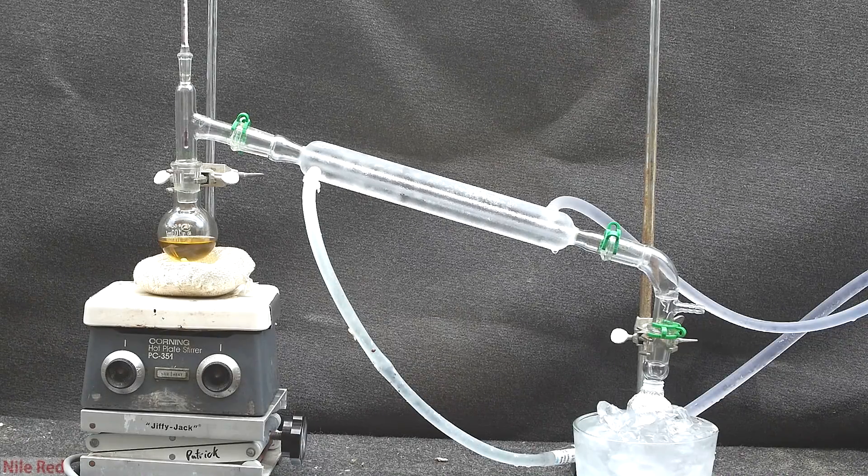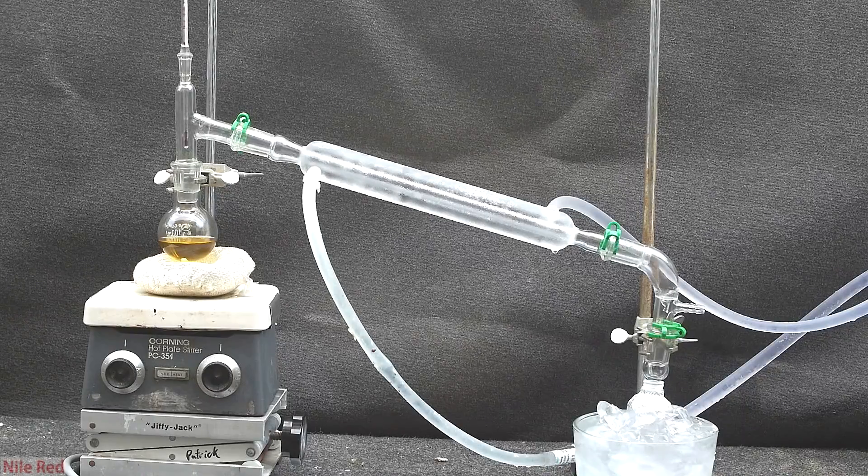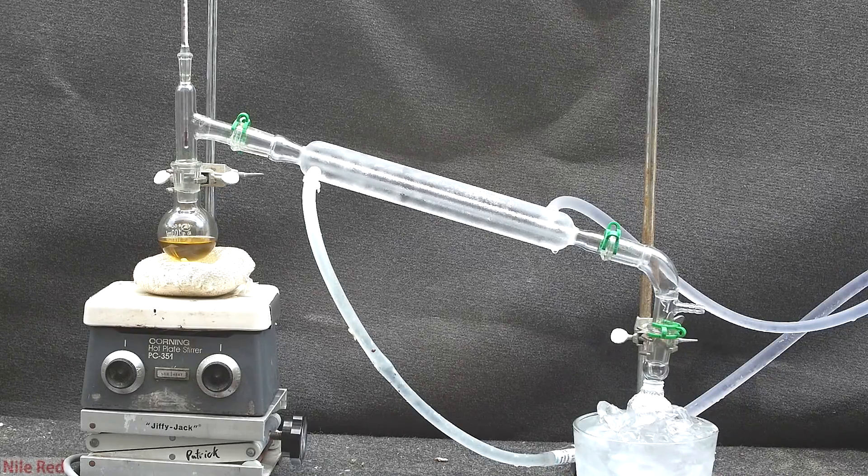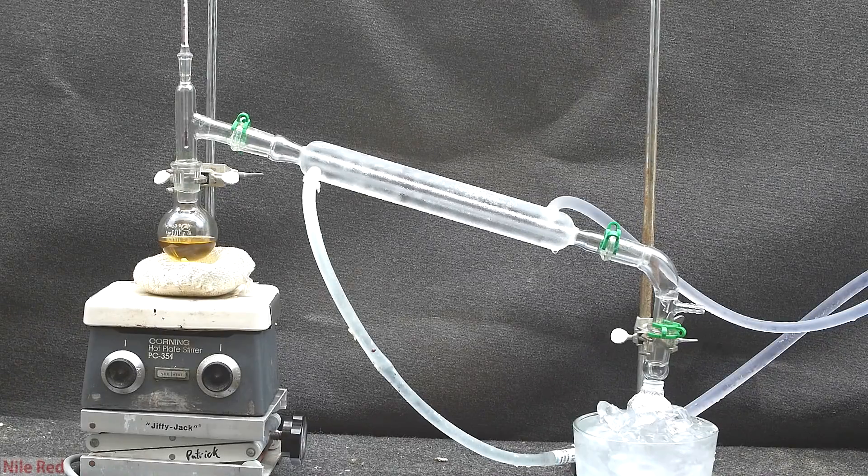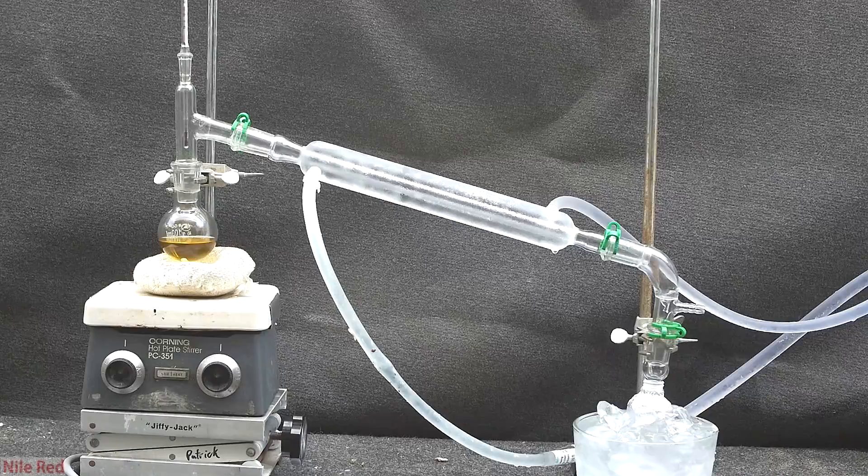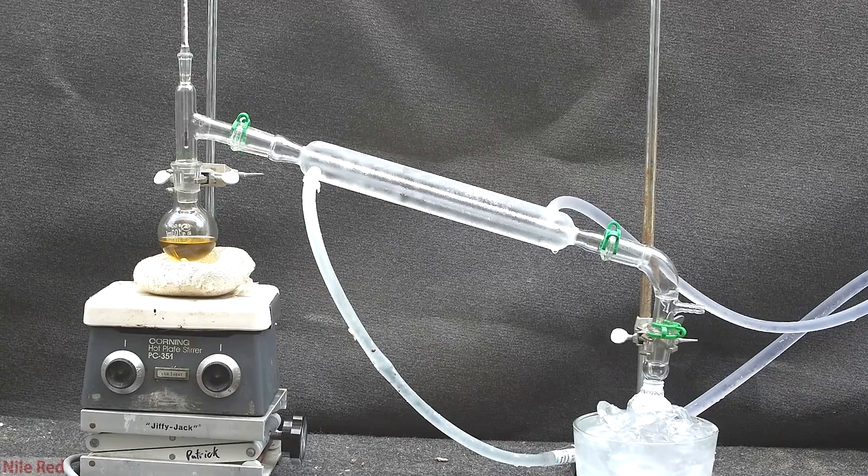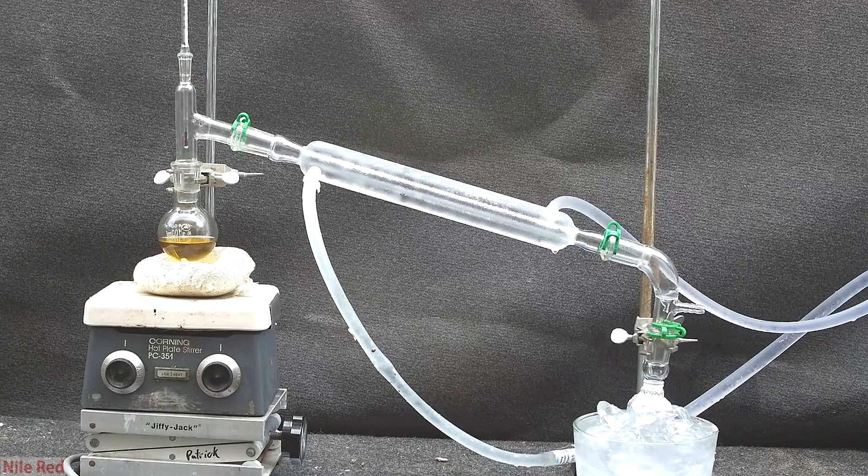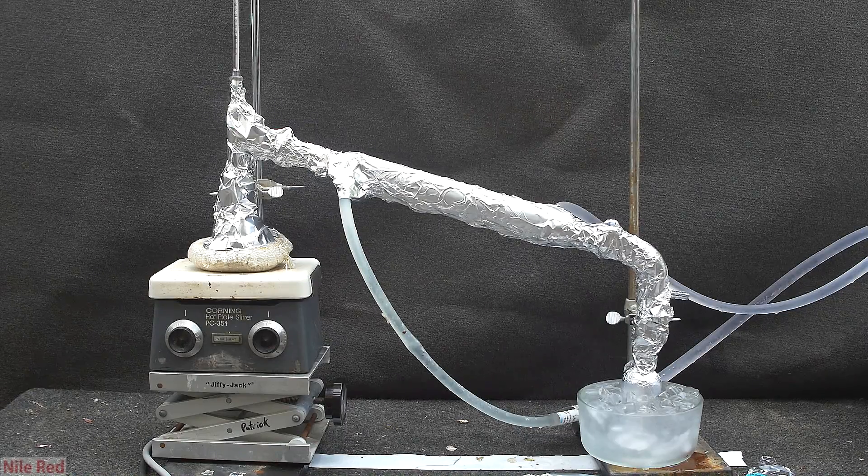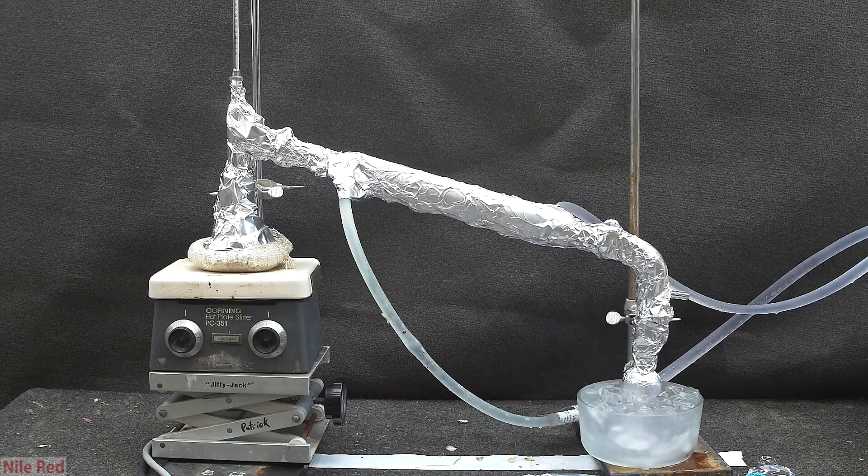The receiving flask is a pre-weighed bottle that contains about 1 gram of hydroquinone. The goal here is to distill all of the acrolein directly into the bottle, and then immediately seal it so we don't have to worry about any transferring steps. You should also notice that the condenser has ice cold water running through it, and the receiving bottle is chilled with ice. And just like before, we cover everything with aluminum foil to try to limit the polymerization.